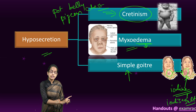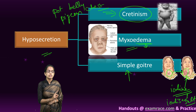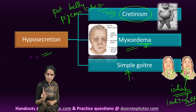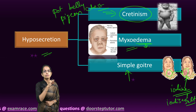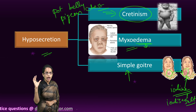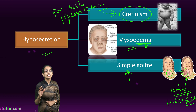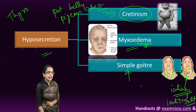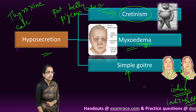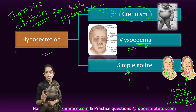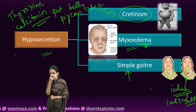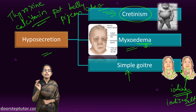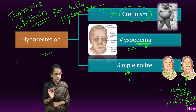To summarize: hypersecretion of thyroxine leads to exophthalmic goiter, while hyposecretion leads to cretinism, myxedema, and simple goiter. The thyroid is the largest endocrine gland, with two lobes connected by the isthmus and parathyroid glands at its four corners. The two most important hormones secreted by the thyroid are thyroxine and calcitonin.